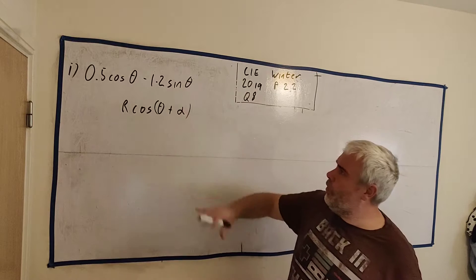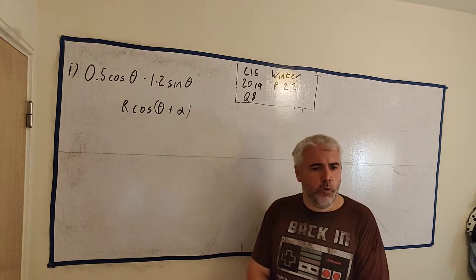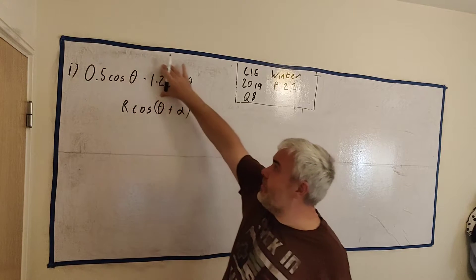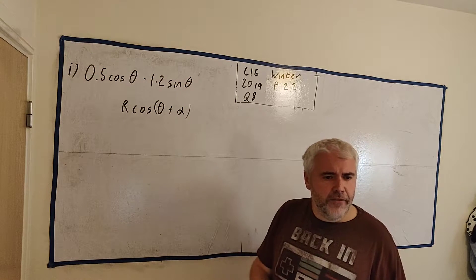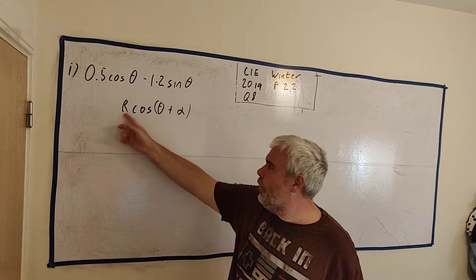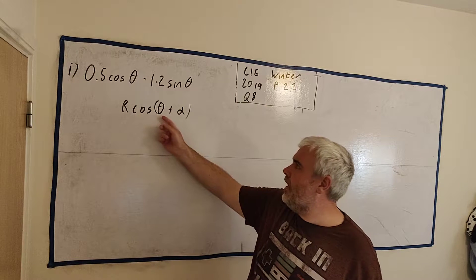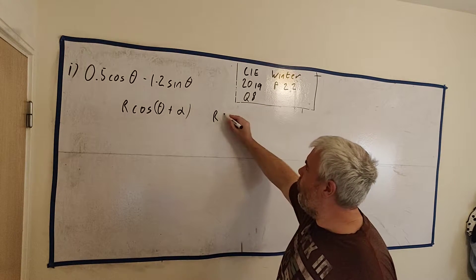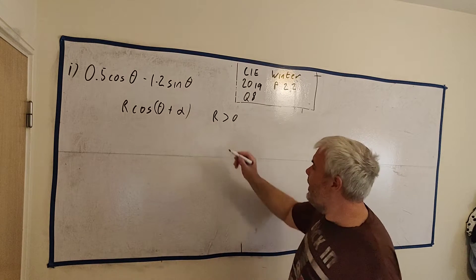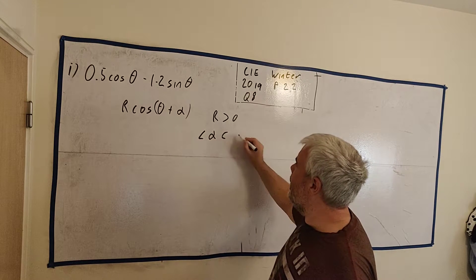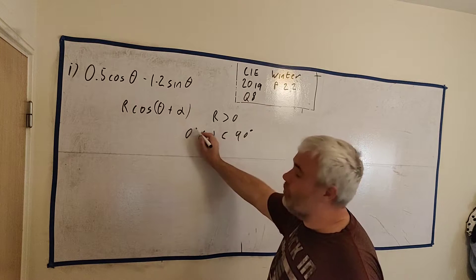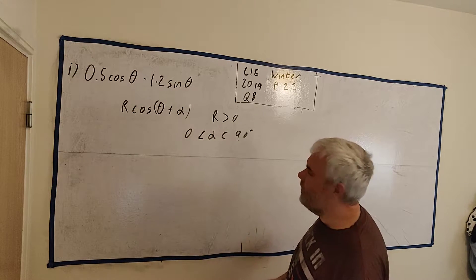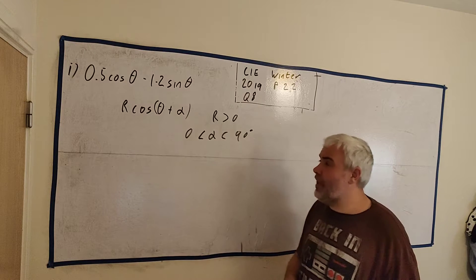I've written most of the important information here, but part 1 of the question asks us to express these two terms in the form of r cosine(θ + α). They also tell us that r is bigger than 0, and that α is between 0 and 90 degrees. And they ask us to find α to the nearest two decimal places.